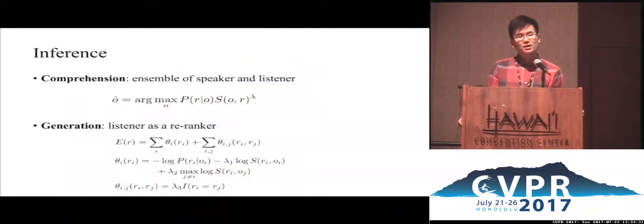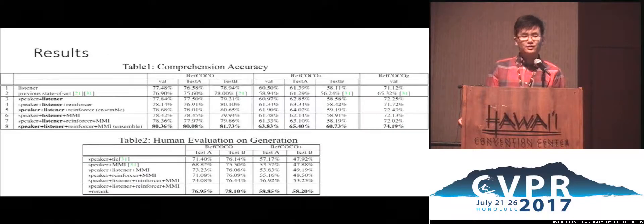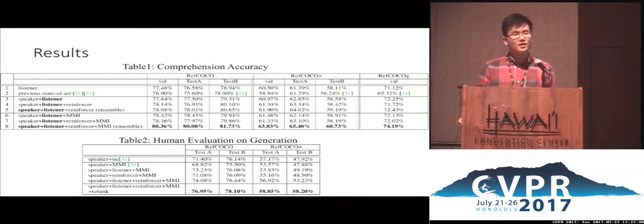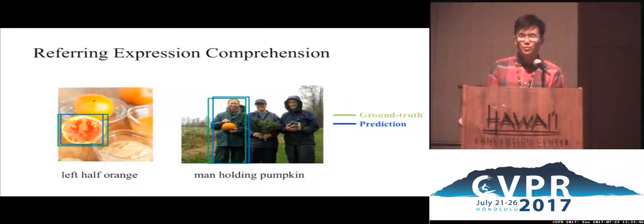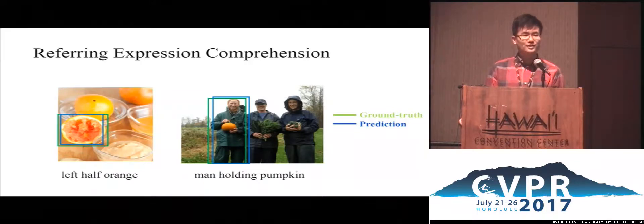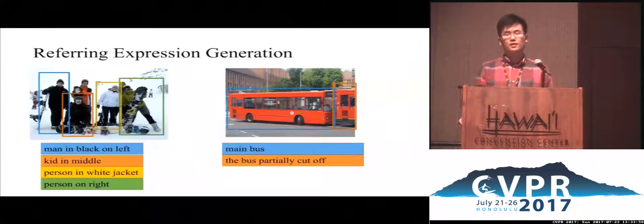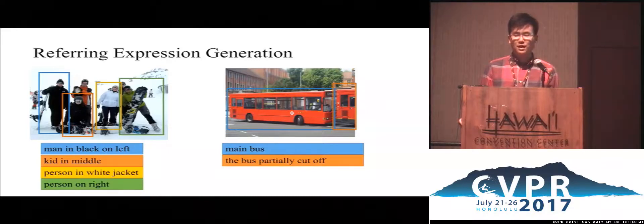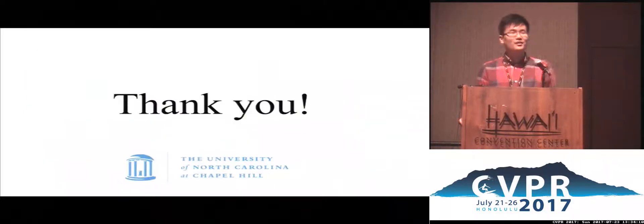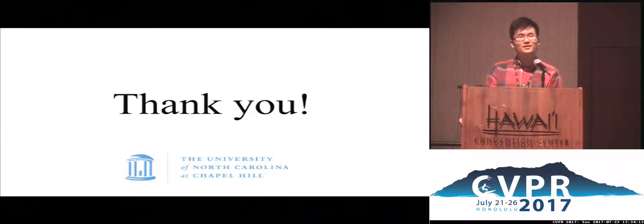Finally, at inference time, the speaker and listener will be used jointly for both comprehension and generation tasks. The results show that our model achieves better performance than other methods by a clear margin on both tasks. Our model is able to understand location phrases like 'left half orange' precisely, and also understands details very well like 'man holding pumpkin.' The generated expressions differ from each other and all of them are referring things correctly. That's all for our spotlight. Thank you for your attention, and for more details, please come to our poster.